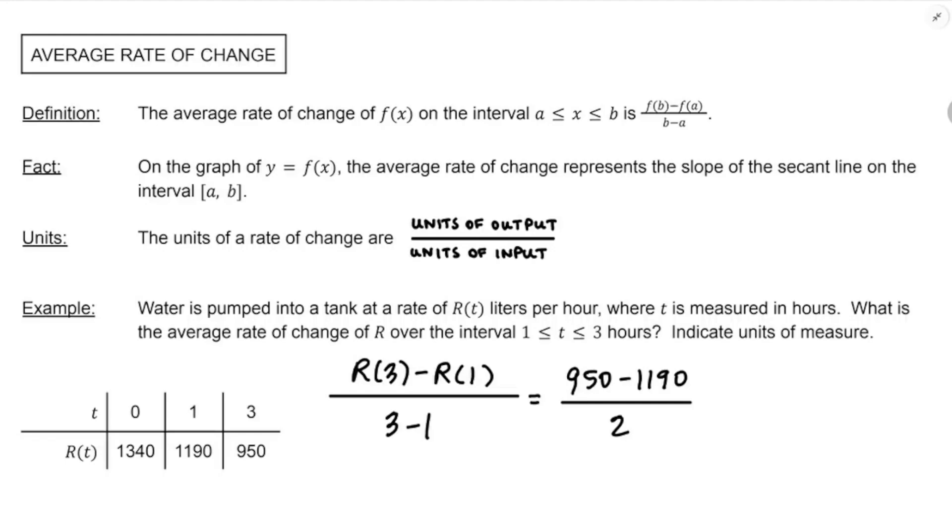When it comes to the units of measure for this, we need to go back and look at the units of the output and the units of the input. In this case, the output is r of t and the input is t. So r of t is measured in liters per hour, and t is measured in hours. So if I want the units, I'm going to write that directly to the right of the value of the average rate of change. It's going to be a fraction. Units of output is liters per hour, units of input is hours. So it's 950 minus 1190 over two liters per hour per hour.